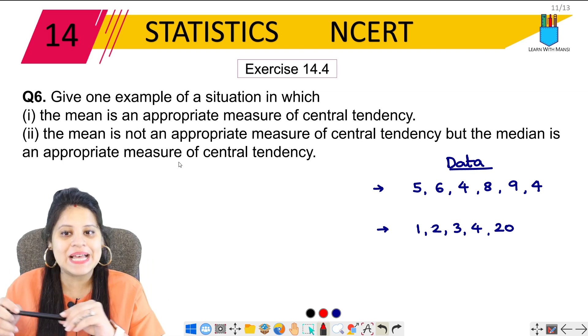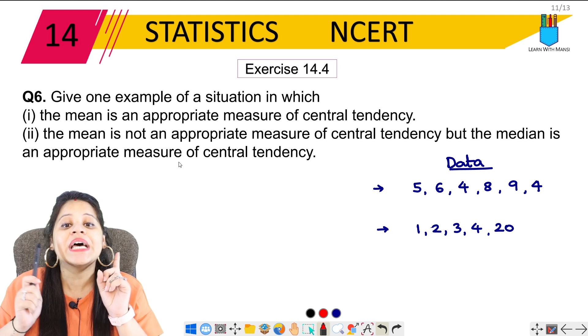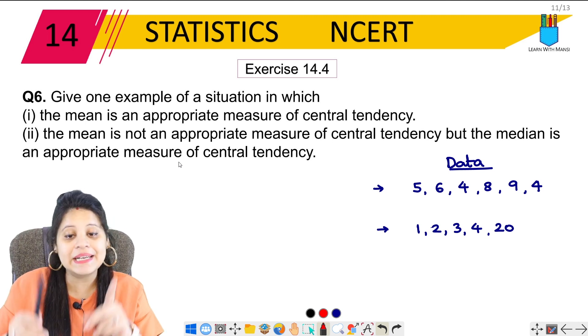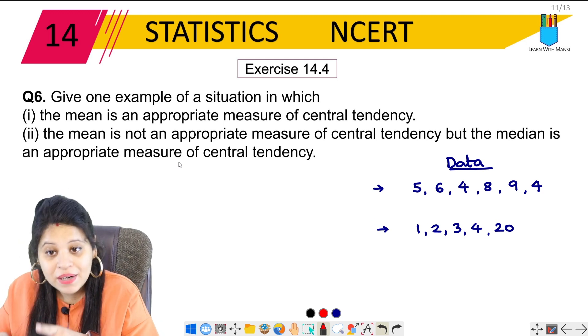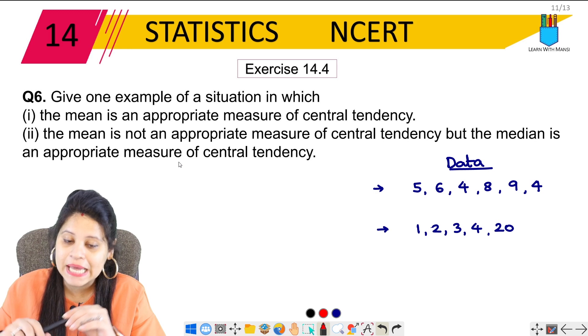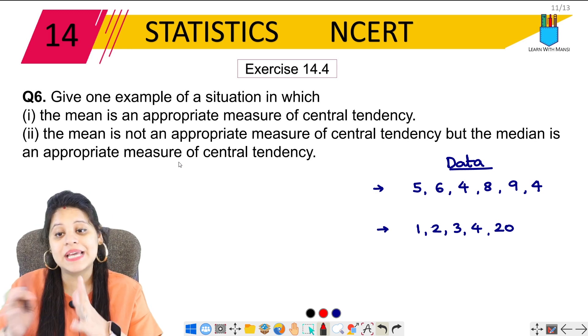The question says, give one example of a situation in which the mean is an appropriate measure of central tendency, and second, the mean is not an appropriate measure of central tendency but the median is an appropriate measure of central tendency.